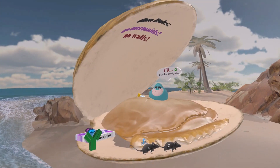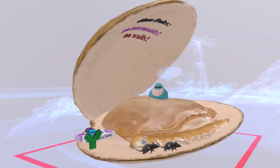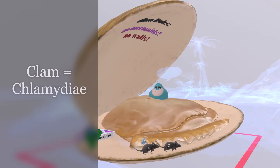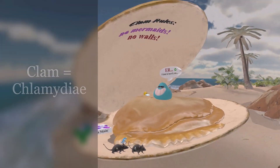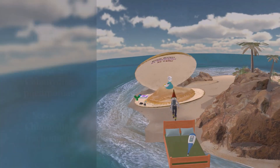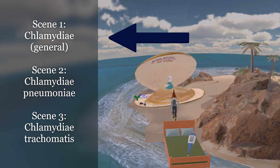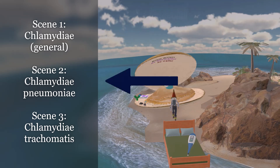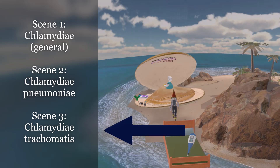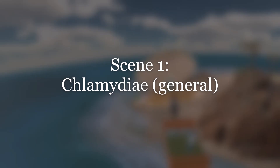Welcome to our scene on Chlamydia, where we see this gigantic clam over here. This gigantic clam is going to remind us that this scene is about Chlamydia. In this scene specifically, we're going to talk about Chlamydia in general. In the next scene, we're going to talk about Chlamydia pneumoniae, and in the scene after that, we're going to talk about Chlamydia trachomatis. So let's begin.